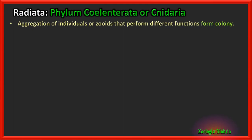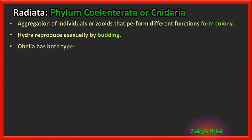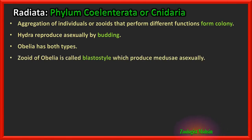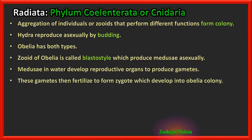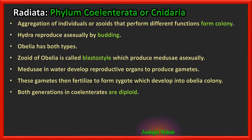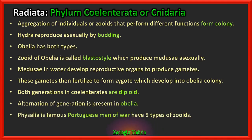Aggregation of individuals or zooids that perform different functions forms a colony. Hydra reproduces asexually by budding. Obelia has both sexual and asexual reproduction. The zooid of Obelia called blastostyle produces medusae asexually; medusae then develop reproductive organs to produce gametes, which fertilize to form a zygote that develops into an Obelia colony again. Both generations in coelenterates are diploid — whether medusae or polyp. Alternation of generation is present in Obelia. Physalia, the Portuguese man-of-war, has five types of zooids including blastostyle.